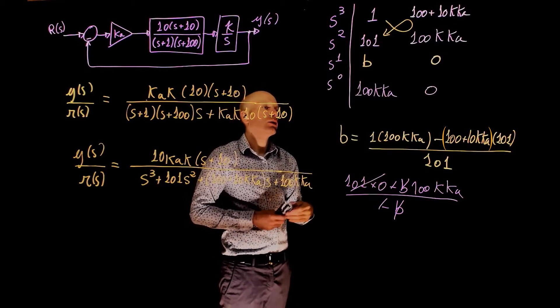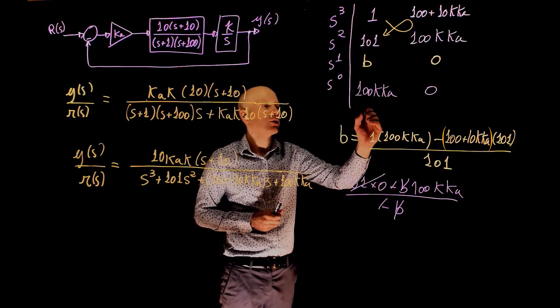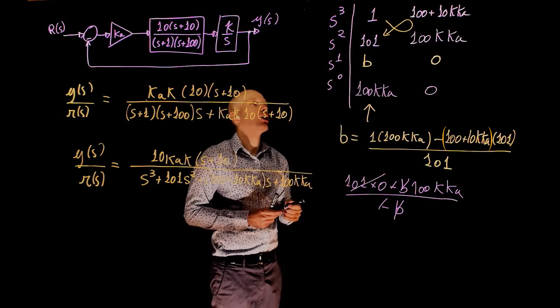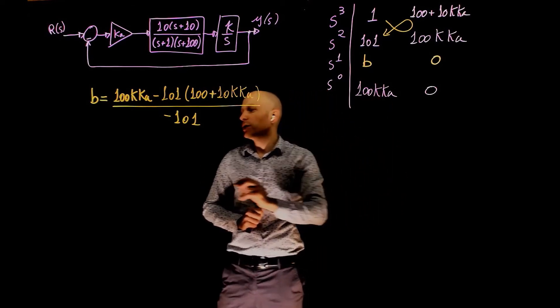Now that the array is completed, we can establish the stability criterion based on sign changes in the first column. So this is the value of b we found here. We can now simplify this expression.